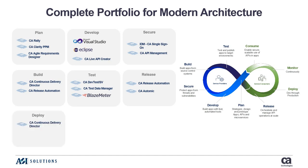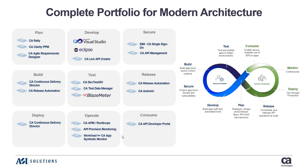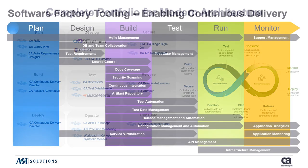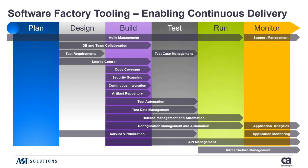For deploying, you'd use CDD to deploy into production. For operations, you think about how you want to continue to monitor this — we have APM, we have BlazeMeter, there are a lot of tools we can use. We're mainly focused on the DevOps products in this scenario, and you'll see why in a few minutes.